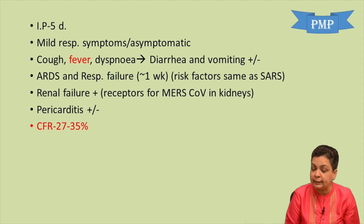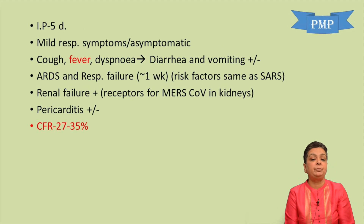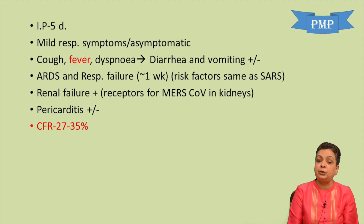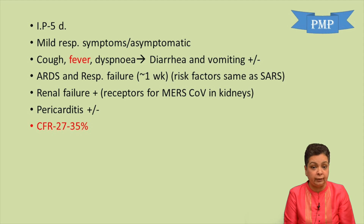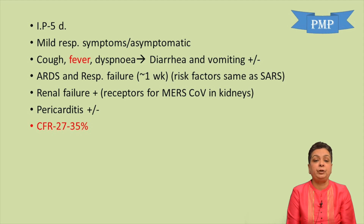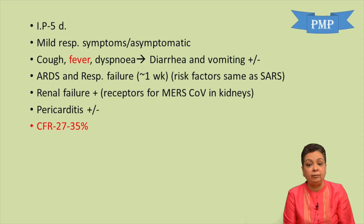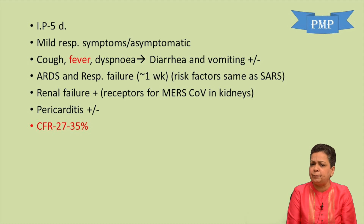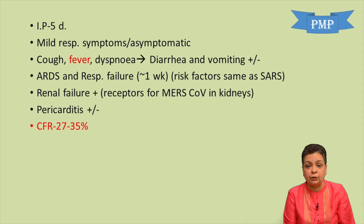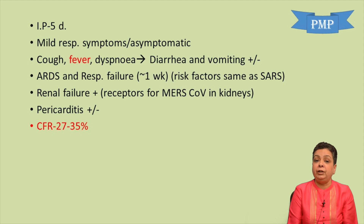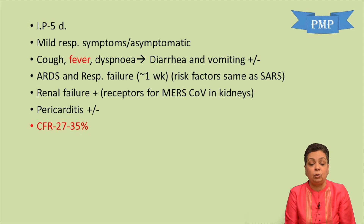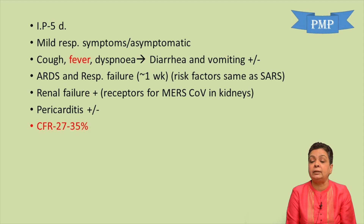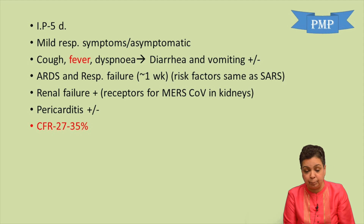The incubation period of MERS is five days. Mild respiratory symptoms or asymptomatic cases may be seen, but symptomatic patients develop cough, fever, and dyspnea, associated with diarrhea and vomiting. ARDS and respiratory failure develop within one week. Risk factors are the same as for SARS coronavirus. Renal failure is often seen because MERS coronavirus receptors are also located in the kidneys. Pericarditis has also been reported in some patients.